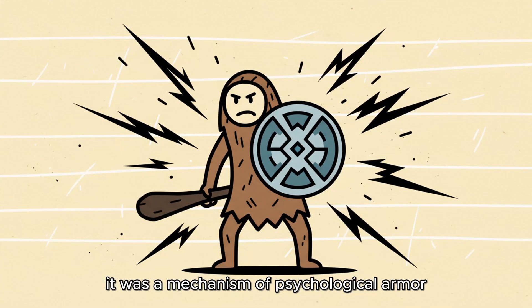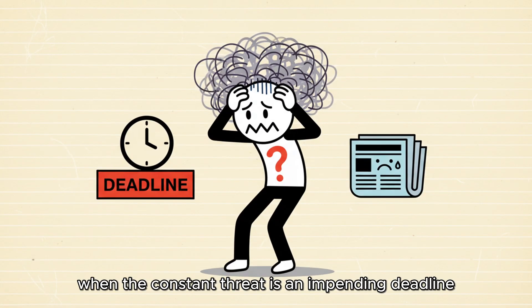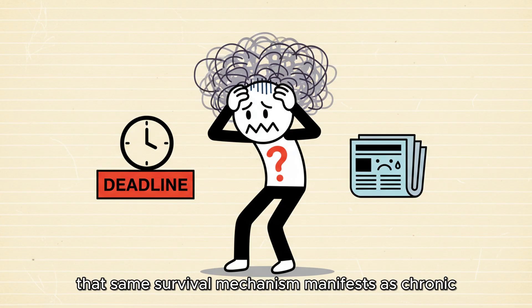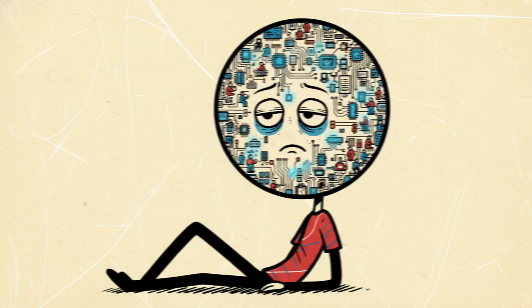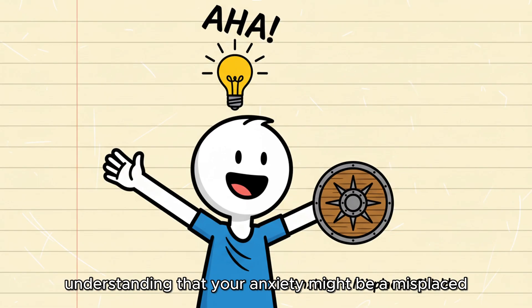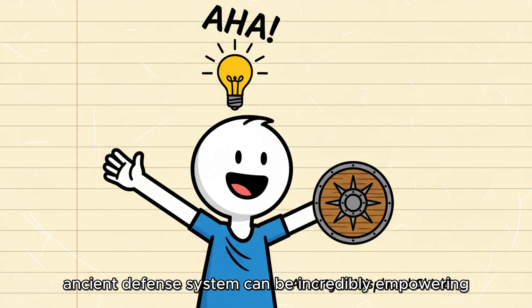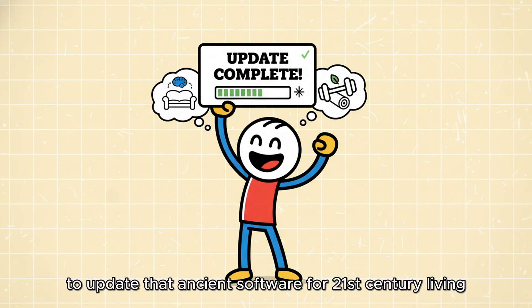But today, when the constant threat is an impending deadline or a negative news cycle, that same survival mechanism manifests as chronic anxiety, rumination, and depression. Your brain is wired for war, and it's exhausting to maintain that alert status when there's no tangible threat. This trait doesn't seal your fate. Genetics loads the gun, but environment pulls the trigger. Understanding that your anxiety might be a misplaced, ancient defense system can be incredibly empowering. It means you are not broken. You simply need modern tools, therapy, mindfulness, exercise, to update that ancient software for 21st century living.